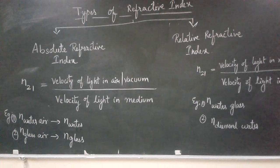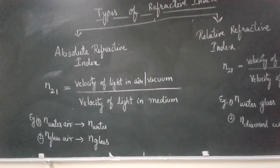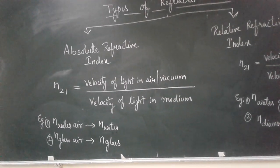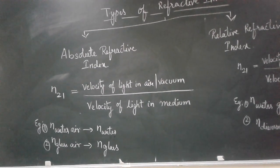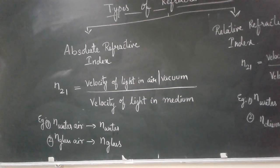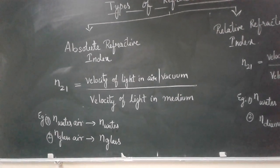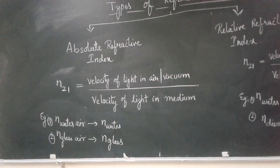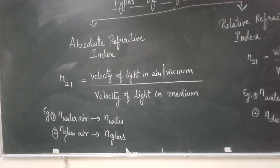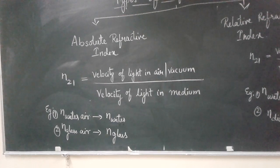For absolute refractive index, the refractive index is calculated in terms of air or vacuum. That means the first medium will be either air or vacuum, and the second medium will be any other medium. This is termed as absolute refractive index.